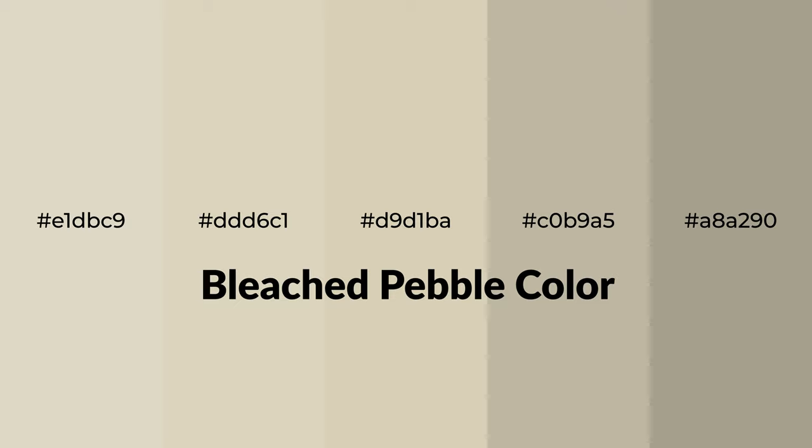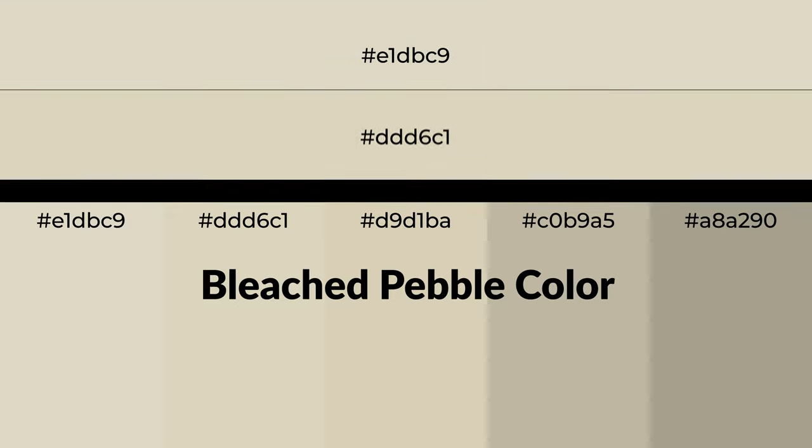Warm shades of bleached pebble color with green hue for your next project. To generate tints of a color, we add white to the color. Tints create light and exquisite emotions. To generate shades of a color, we add black to the color. Shades are used in patterns, 3D effects, and layers, creating depth and drama.